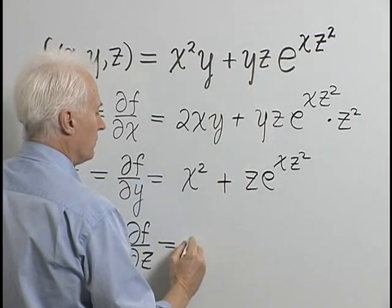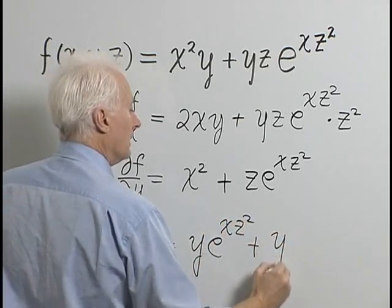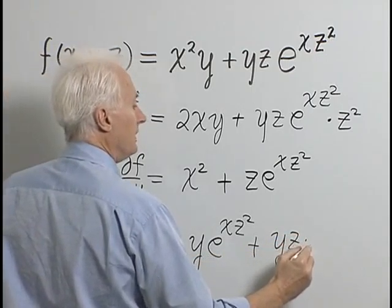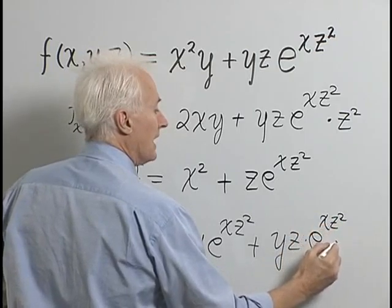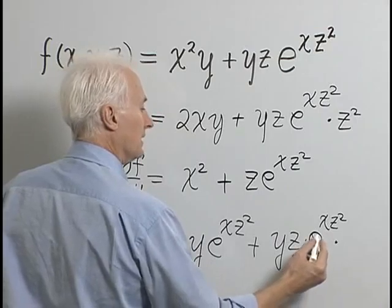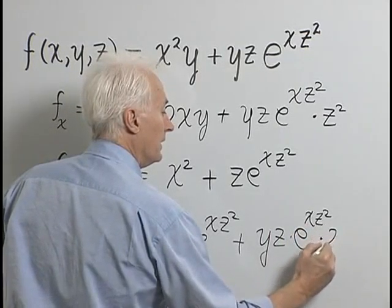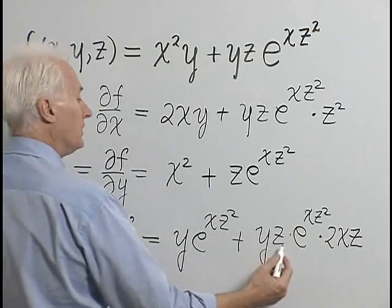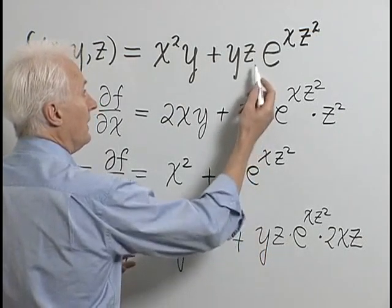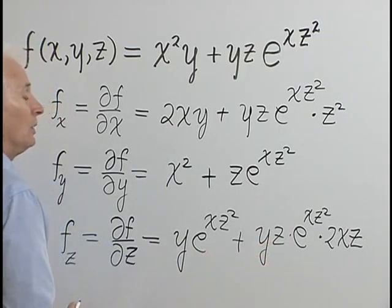Using the product rule: derivative of the first factor z times y gives y · e^(xz²), plus the first factor yz times the derivative of e^(xz²) with respect to z. By the chain rule, that's e^(xz²) times the derivative of xz², which is 2xz. So the partial derivative with respect to z has two terms from the product rule, since the first term's derivative was zero.